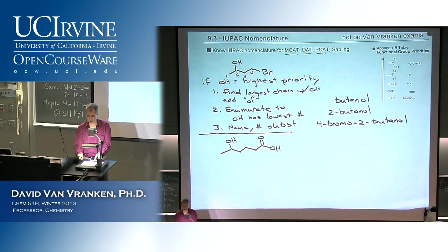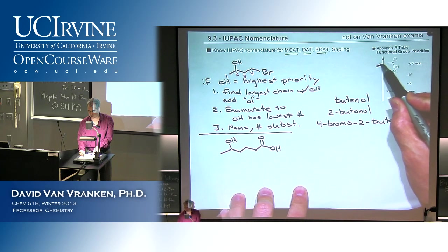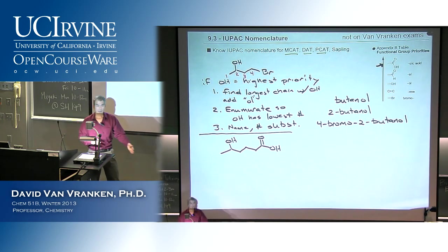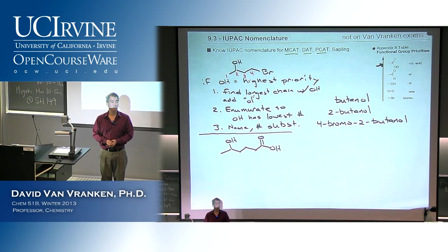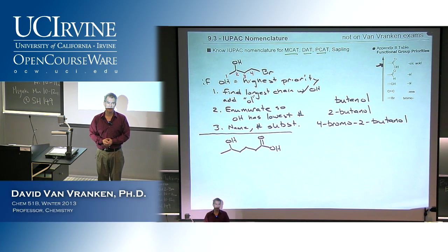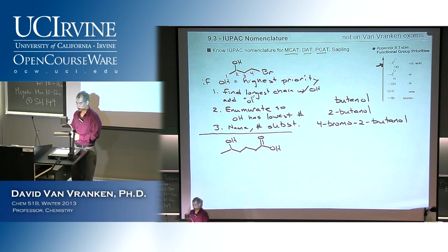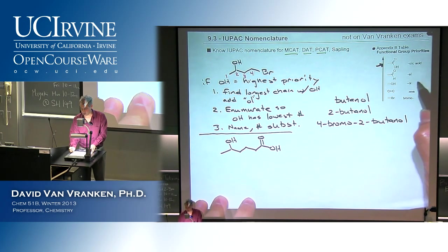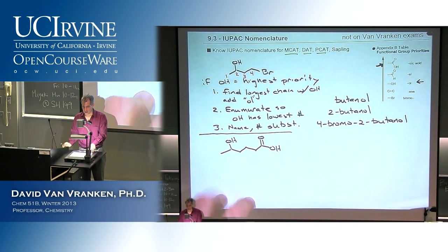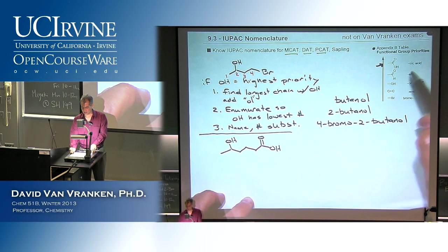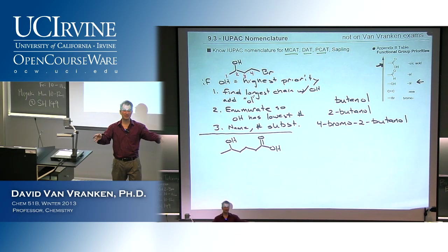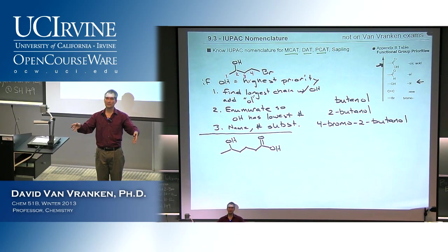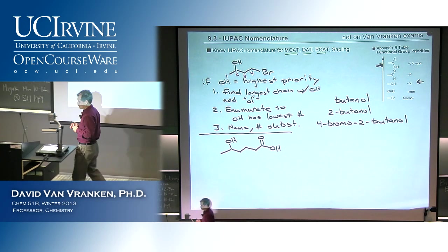If the highest priority functional group is a carboxylic acid, the name of that molecule is going to end in -oic acid. If the highest priority functional group in your molecule is an alcohol, the name will end in -ol: cyclopentanol, butanol, hexanol — there will be an -ol ending. But if the highest priority functional group is something like -oic acid and you have a hydroxy group, you won't end the name in -ol; you're going to use the word hydroxy to show it as a substituent.